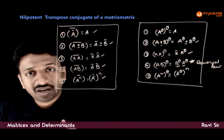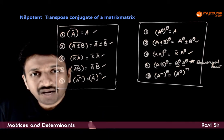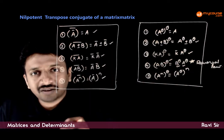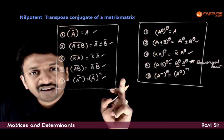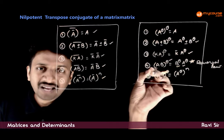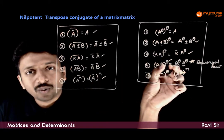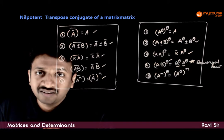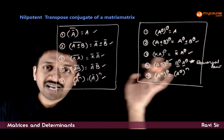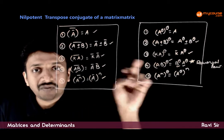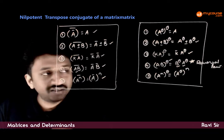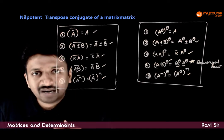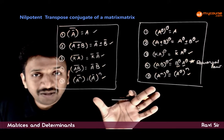We have seen that the reversal law works in transpose: (AB) transpose is B transpose times A transpose. So here also, within theta, we have a transpose because theta is the conjugate transpose. So whenever there is a transpose hidden in the operation, the reversal rule works. That does not apply to plain conjugate: (AB) conjugate is directly A conjugate times B conjugate. But (AB) theta is B theta times A theta, clearly because there is a transpose involved in the transpose conjugate. And A^n whole theta is (A theta)^n. These are the properties to keep in mind for simplification of problems.